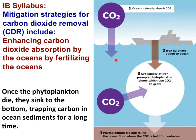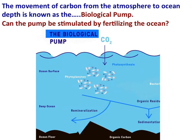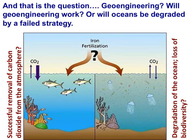Carbon dioxide is taken up by a bloom of phytoplankton stimulated by fertilizers like iron. Once the phytoplankton die, they sink to the bottom, trapping carbon in ocean sediments for a long time. The movement of carbon from the atmosphere to ocean depth is known as the biological pump. Can the pump be stimulated by fertilizing the ocean with iron? Will geoengineering successfully remove carbon dioxide from the atmosphere and maintain a natural system, or will oceans be degraded by a failed strategy?